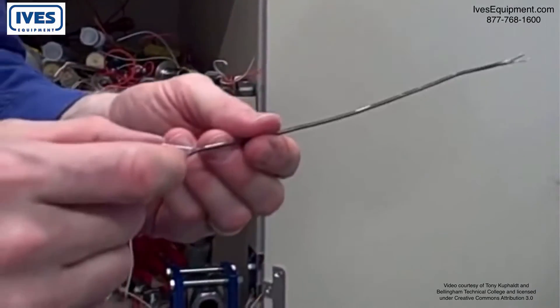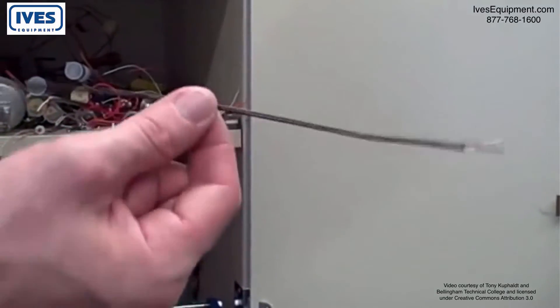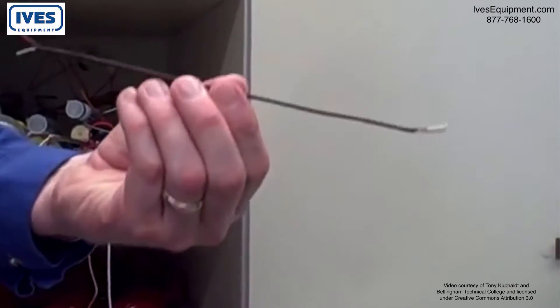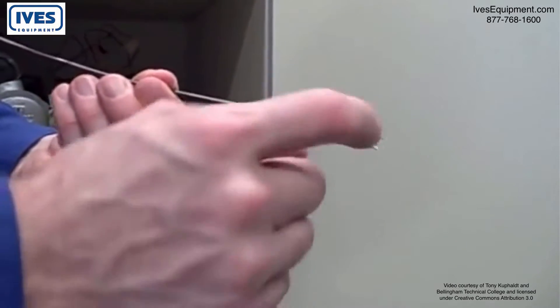We could then connect the other two ends to a thermocouple instrument and have ourselves a working sensor. This is how simple a thermocouple can be. It's nothing more than a pair of dissimilar metals of specific type joined together to make a junction.